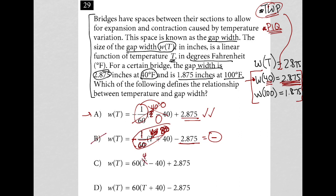Choice C: replacing T with 40 makes that term zero, so I also get a positive 2.875 — choice C passes this test too. Choice D has the same issues as B; 60 times 80 is 4,800, which is not going to give me 2.875, so D is eliminated. I'm now down to two options: either A or C.